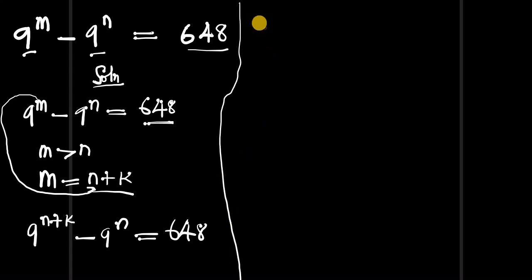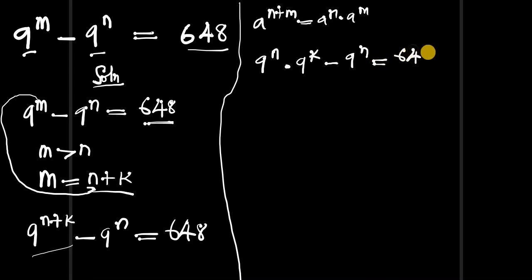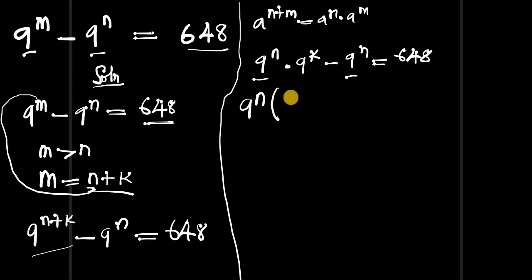Now using the exponent identity — a to the power of n plus m equals a to the power of n times a to the power of m — we expand 9 to the power of n plus k as 9 to the power of n times 9 to the power of k. So the equation becomes: 9 to the power of n times 9 to the power of k, minus 9 to the power of n, equals 648. Factoring out 9 to the power of n gives us: 9 to the power of n times (9 to the power of k minus 1) equals 648.